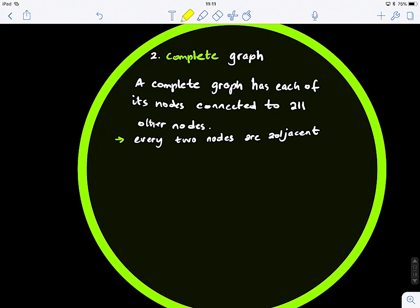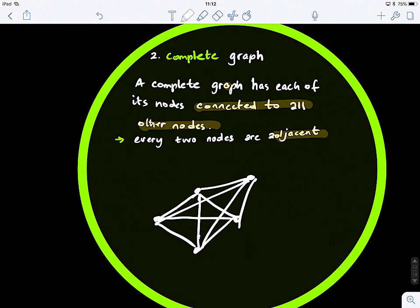Now, the second one is what we call a complete graph. This is quite simple. So complete graph is a graph that has each of its nodes connected to all other nodes. So basically, every two nodes are adjacent. So for example, this is a complete graph. So it's very simple. If I add another node, I need to connect it to all other nodes. If I add another one, it needs to be connected to all other nodes.